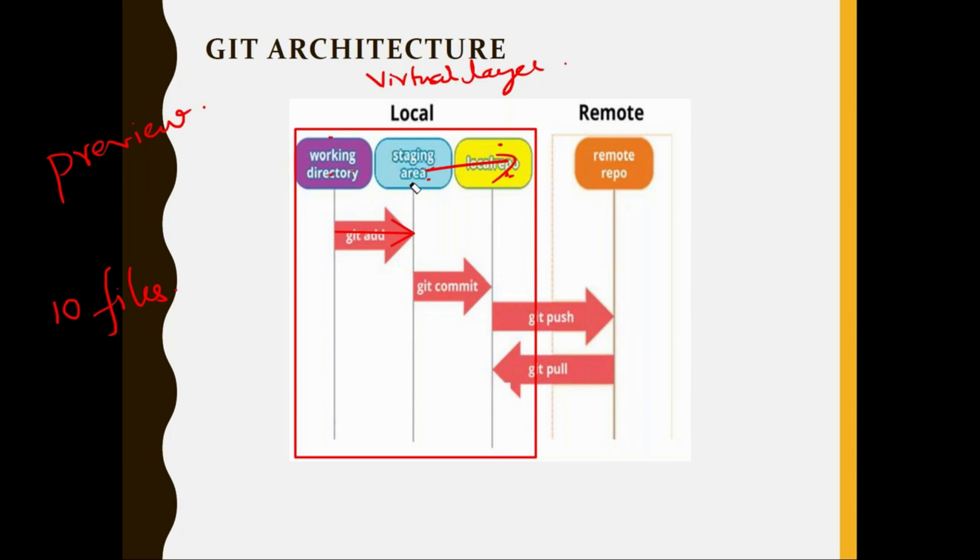First you move to staging area, then from staging area only you can move to local. You cannot just move from staging to remote, not possible. You have to go only in this direction. Then from local to remote. So it's like three steps. First step, second step, third step. Three steps before you move your changes to remote. This is called git tree or git architecture. Three steps before your changes go to remote.